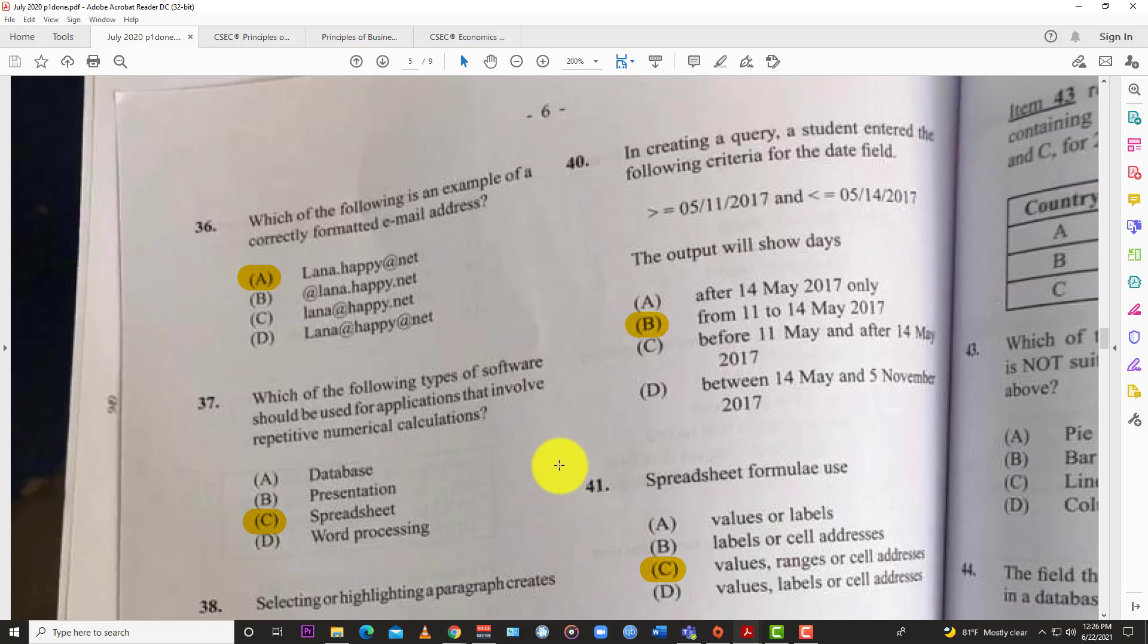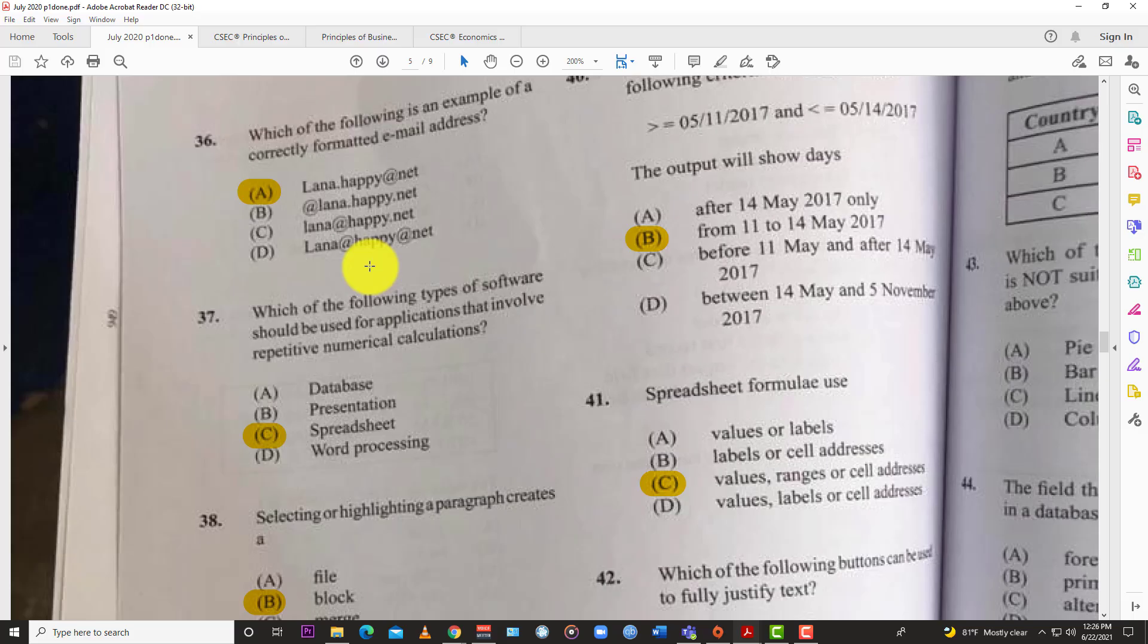Question 36: Which of the following is an example of a correctly formatted email address? Everybody knows what an email address is. All of us have one. The answer is A: the format with the at sign coming after the initial name.